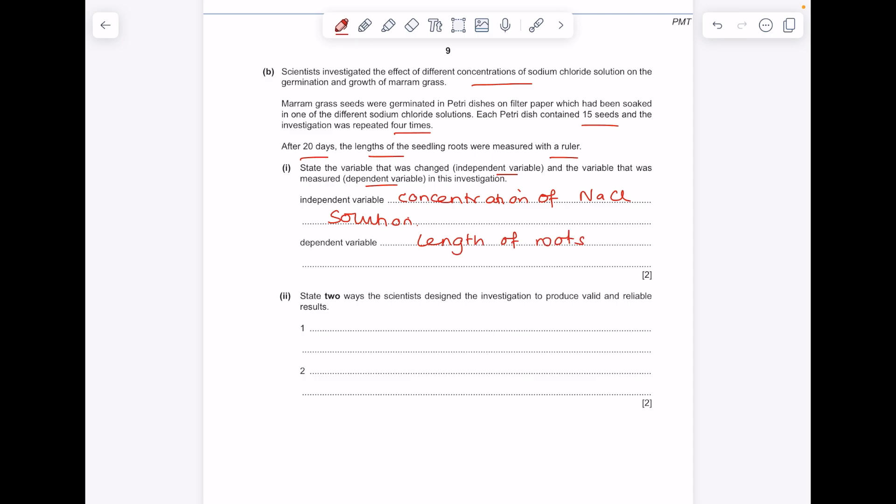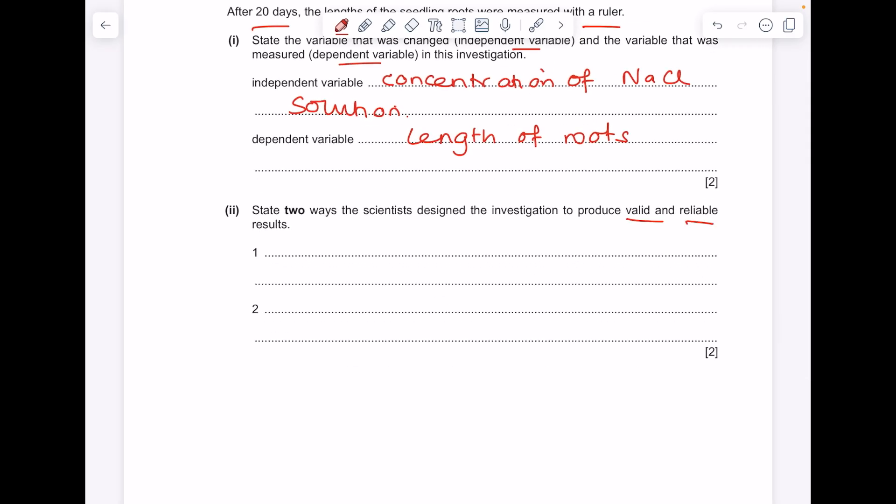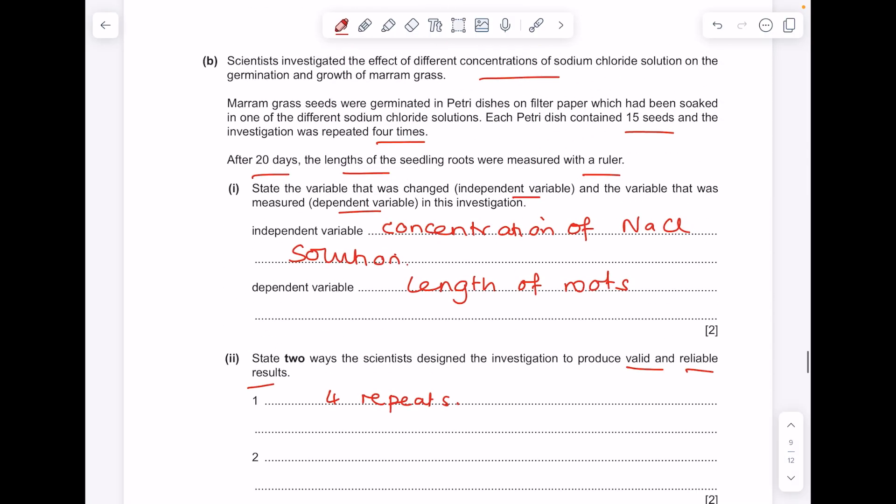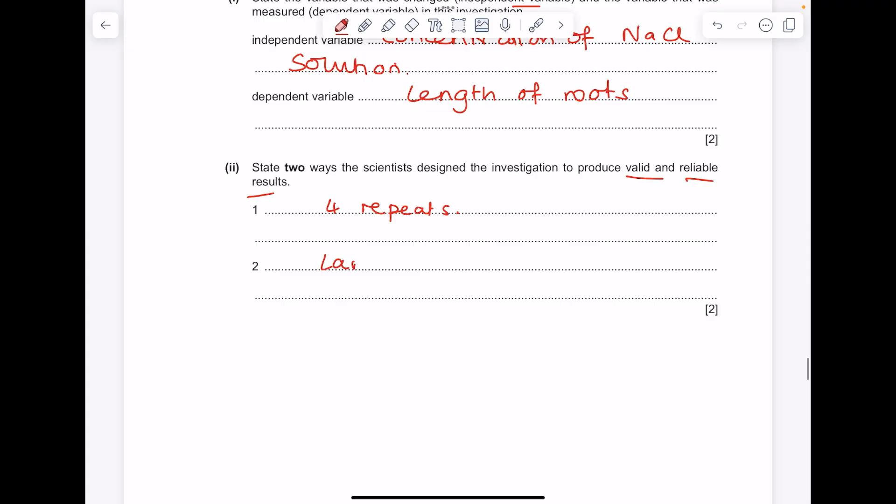State two ways the scientists designed the investigation to produce valid and reliable results. Reliability is all about repeating. They said that they repeated it four times. And it also says they used a large number of seeds and that will increase the validity.